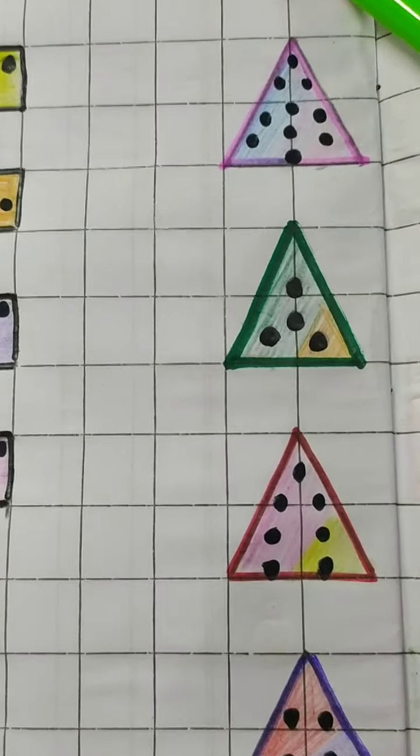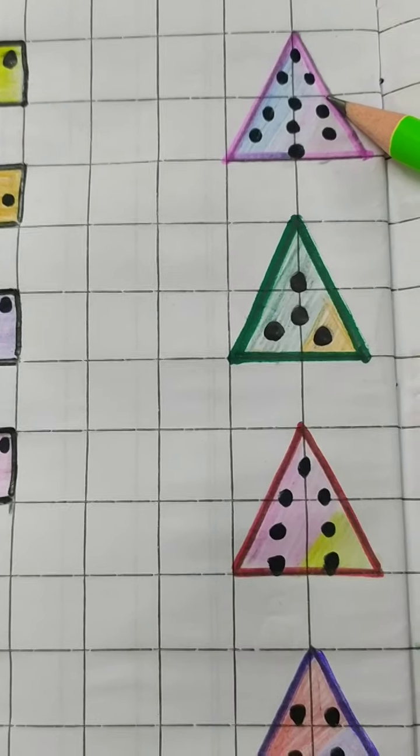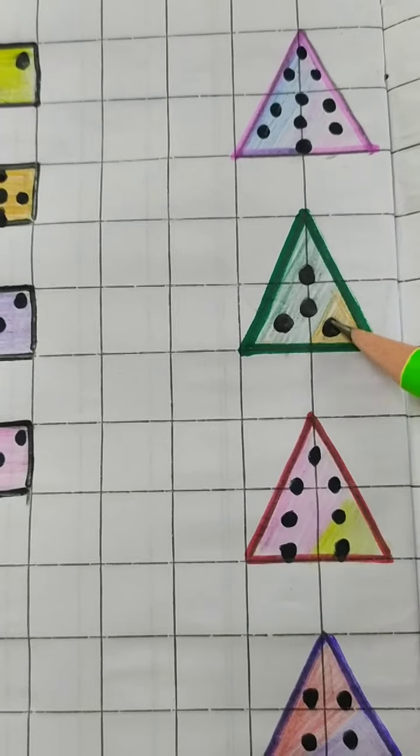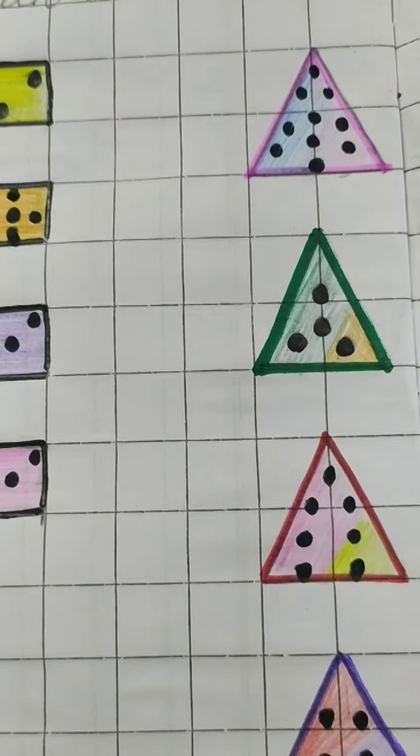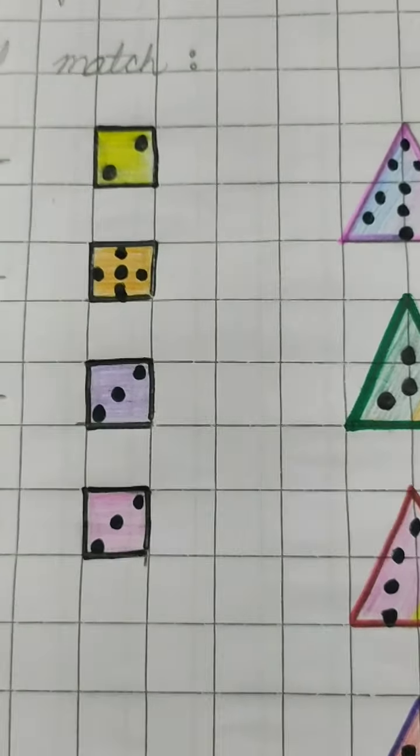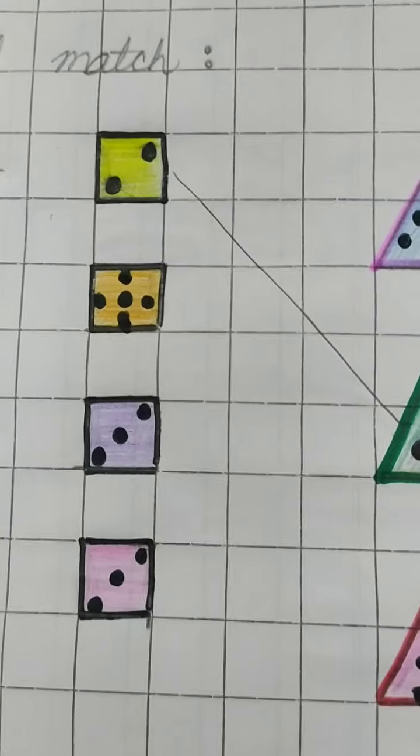The first triangle, joh ye first triangle hain, is mein bohut saari dots hain. So there is no point of counting it. Phele isko count kerke dekhte hain. 1, 2, 3, 4. Oh, wow! We got the answer. Ye toho 4 hain, aur uski equal hain. Toh hum kya kareenge? Hume aise line draw kerke, isko isse match kareenge.